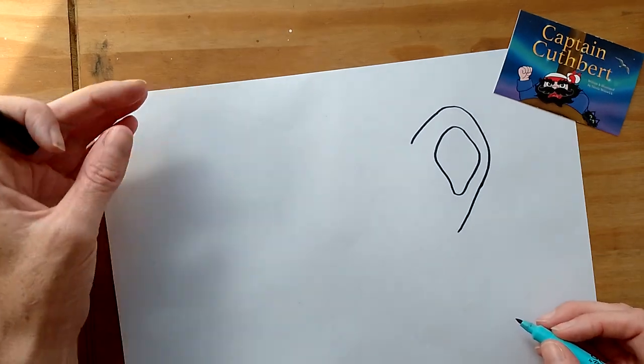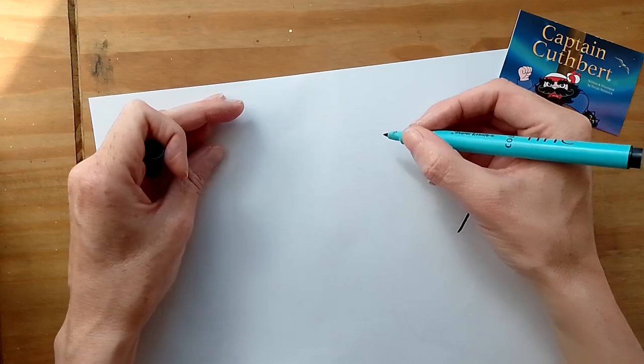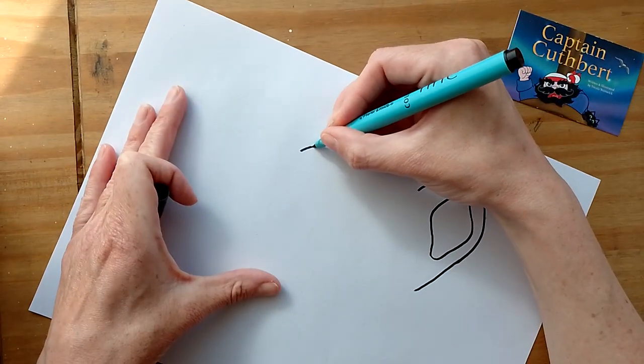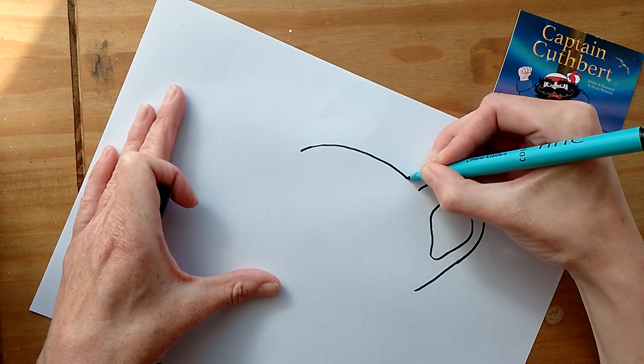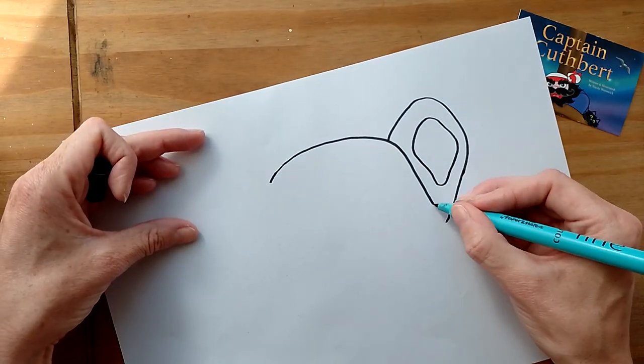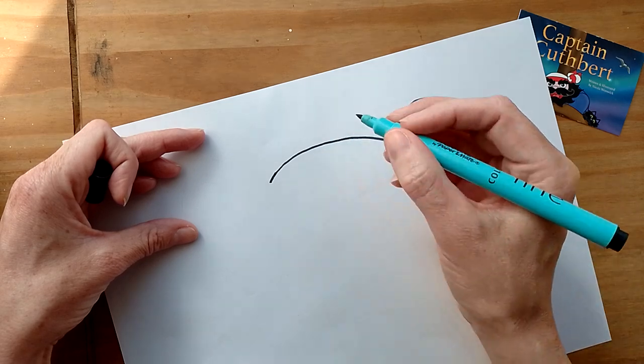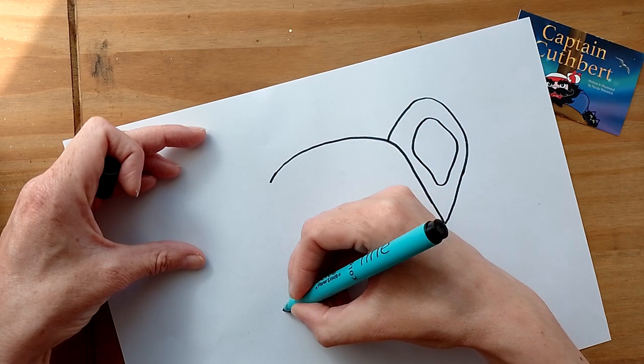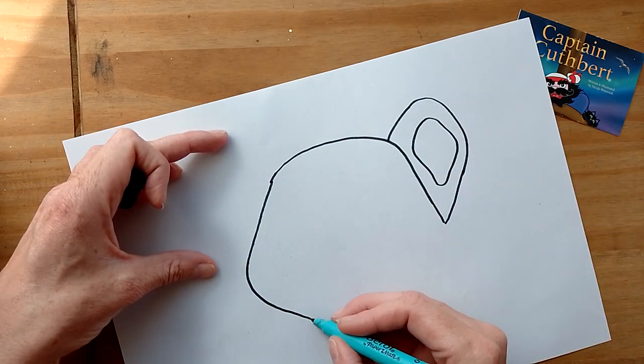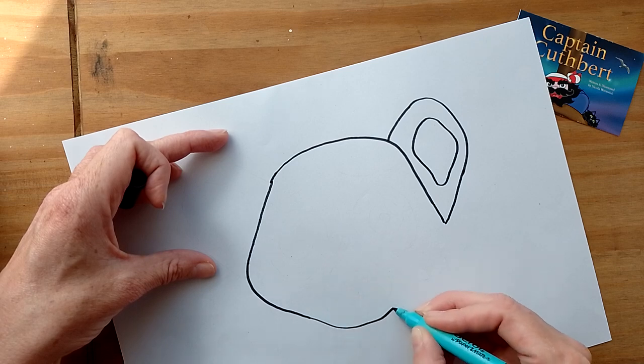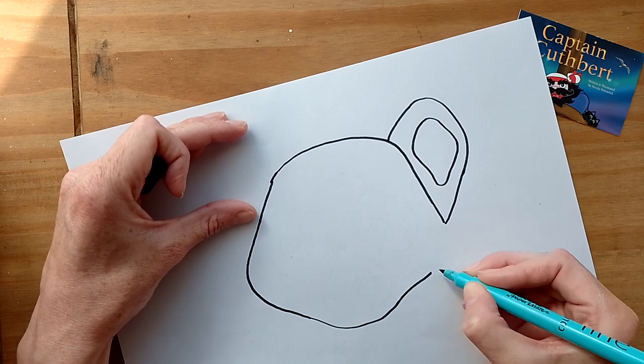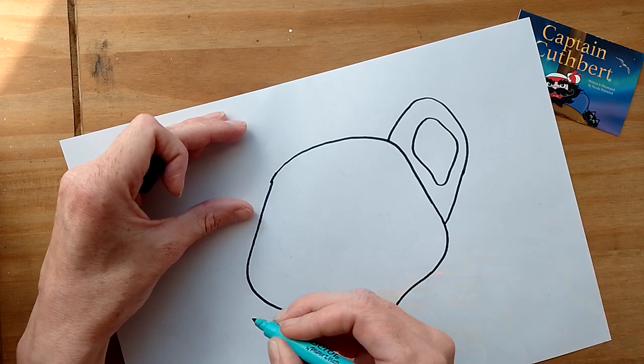I'm going to draw the head. I'm just going to turn the paper so you can see where I'm going. Like that. I'm going to come down to the bottom of the ear there, and then I'm going to draw this side. I'm going to draw the big cheeks. I like the big cheeks, they're quite cute. I'm trying the hardest, get that one similar to that side.